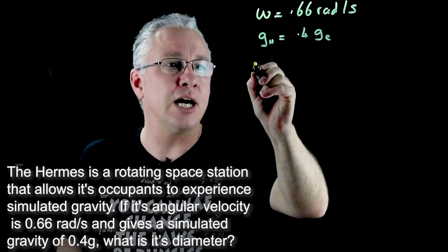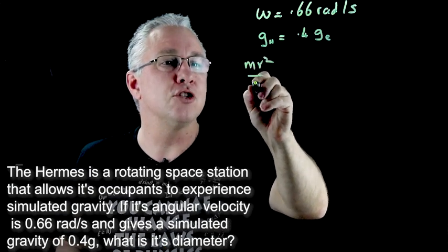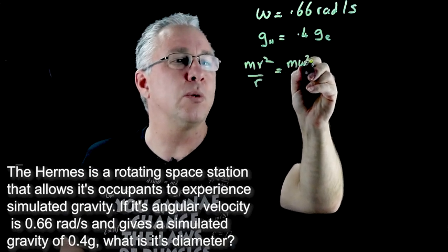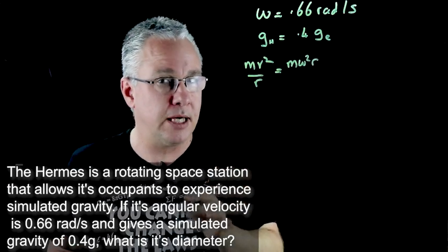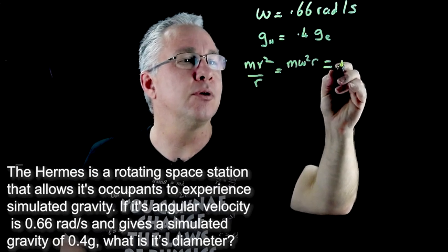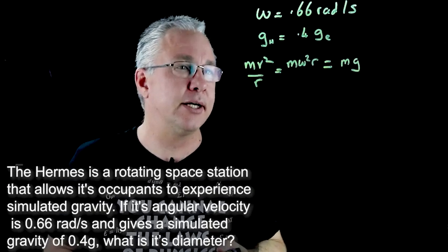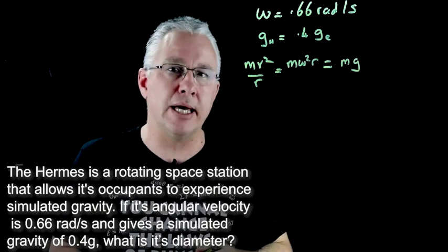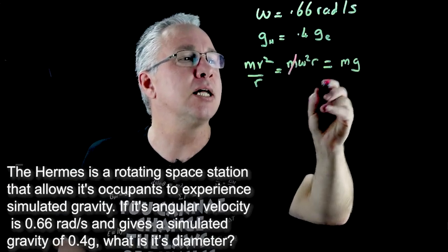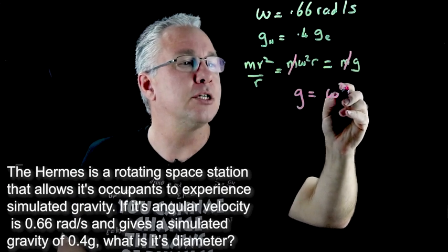And how do we solve this? Well we start off by saying that mv squared over r the centripetal force which is also equal to m omega squared r because the relationship between v and omega is that v equals omega r is equal to the normal force or the simulated weight force that they are experiencing. Now you can see straight away that we have two m's and both of them can be cancelled out. So we'll cancel out the m's so now what we end up having is g is equal to omega squared r.